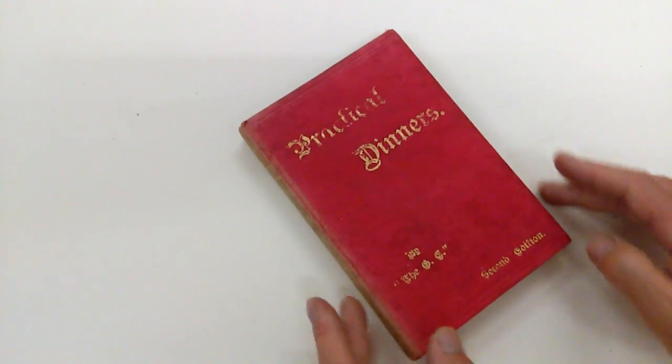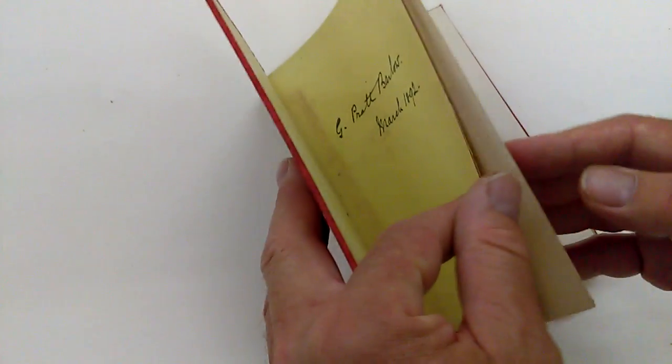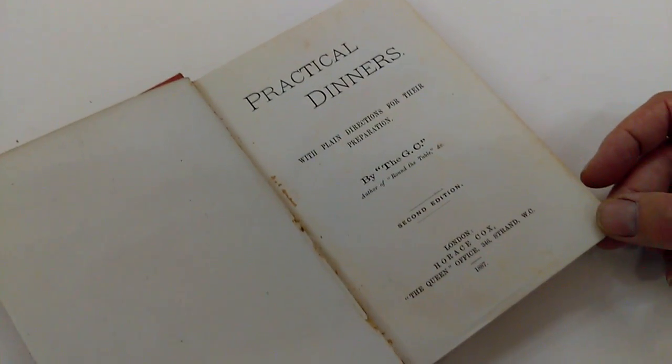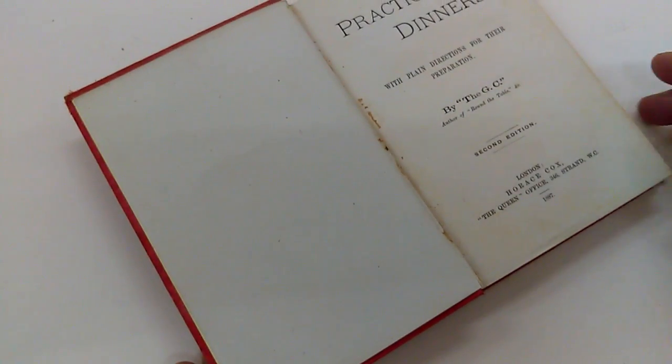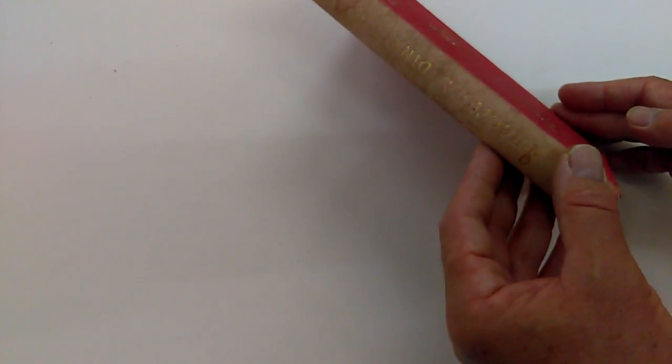Right, ladies and gentlemen, a nice book from Queen Victoria's Golden Jubilee Year, 1887. It's the second edition of Practical Dinners with Plain Directions for Their Preparation by the GC, which is a sort of nom de plume, published by Horace Cox of London.